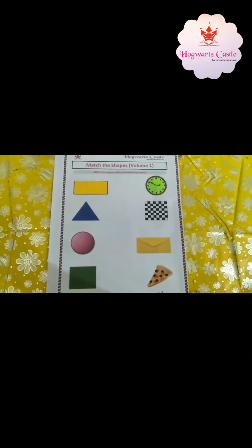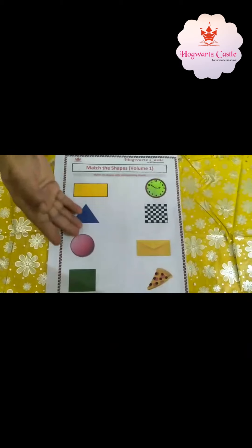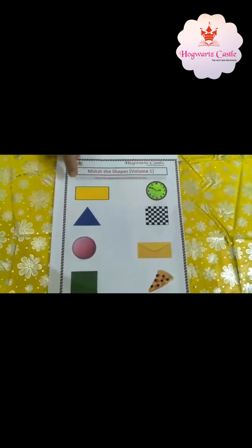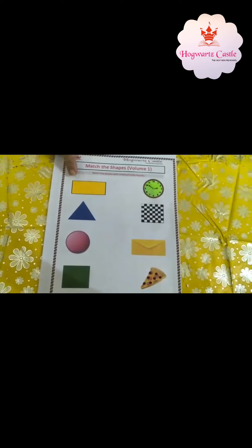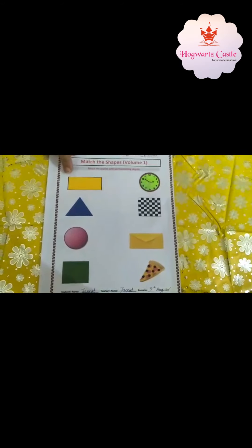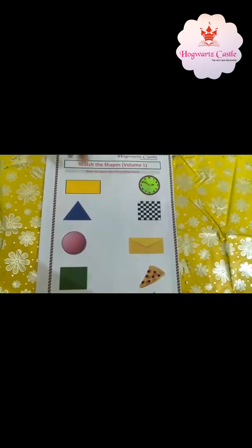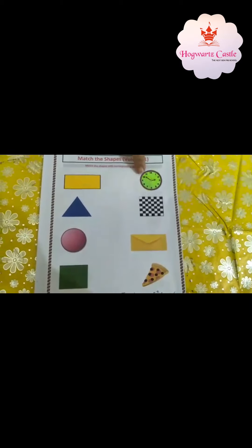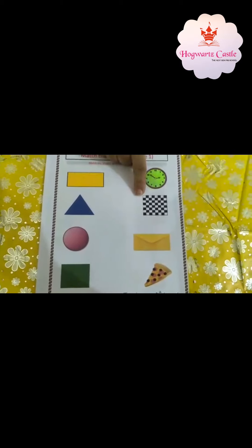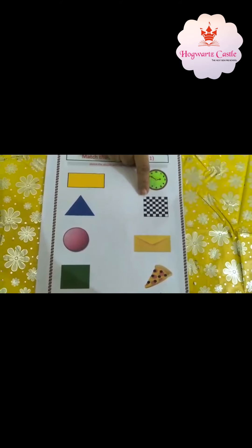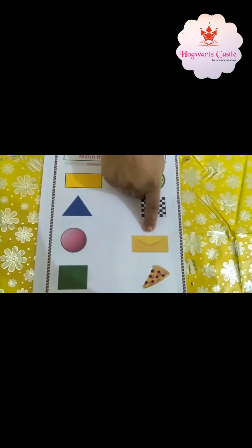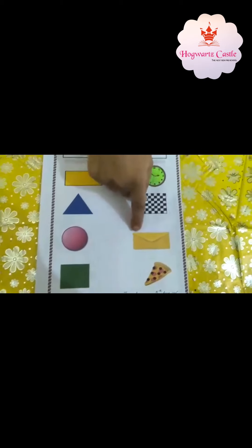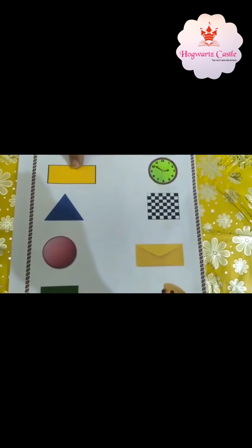Thank you. Okay babies, time for another sheet. Here are some shapes, and you will match the same shapes on the opposite sides. What shape is this? This is a rectangle shape. Now match the thing which has a rectangle shape. An envelope has a rectangle shape — now match the thing with this.